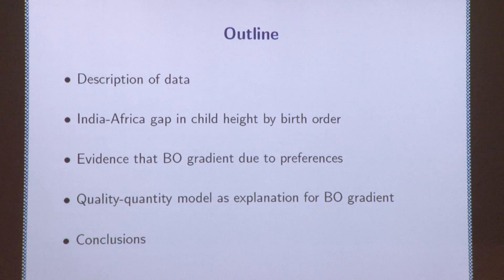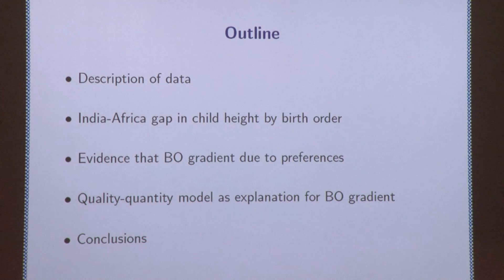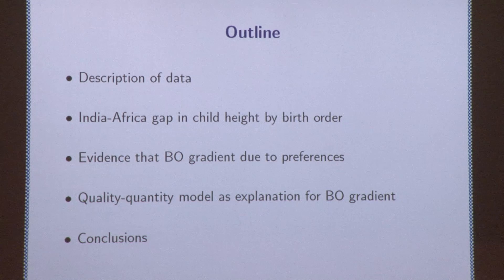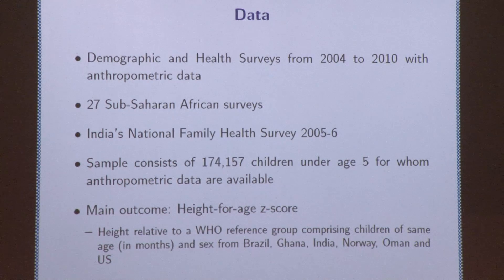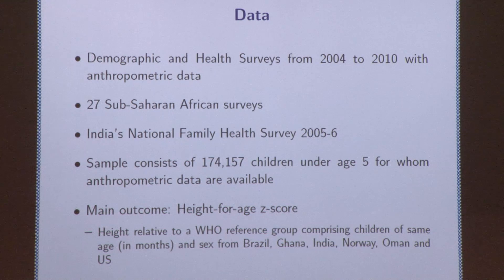I'm going to describe the data briefly and then show evidence on the India-Africa gap in child height by birth order. Then I'll talk through some evidence for why this seems to be about preferences, and go through the quality-quantity tradeoff model. The data are demographic and health surveys. We use the most recent Indian DHS from 2005-6, and the period bracketing that — from 2004 to 2010 — for African surveys that have anthropometric data. That's 27 surveys in 25 countries. The sample consists of children under the age of five for whom we have height data, totaling 174,000 children.